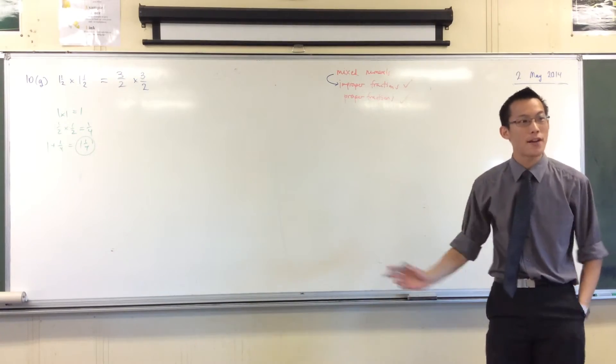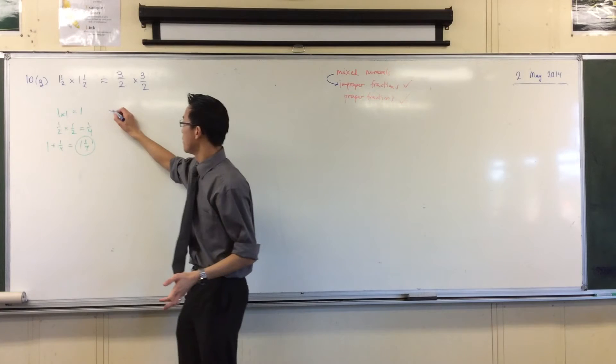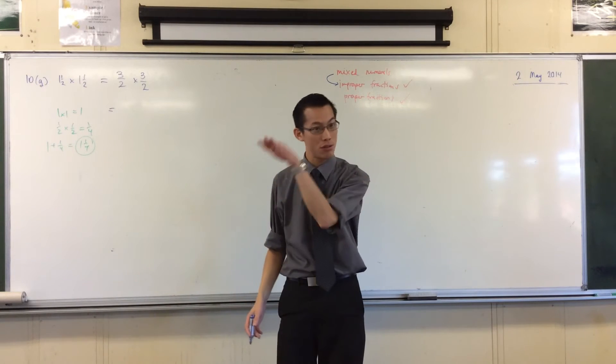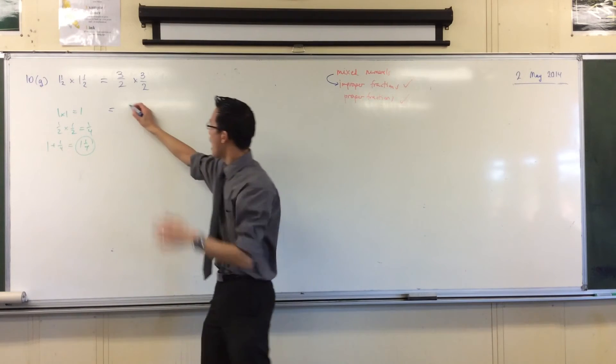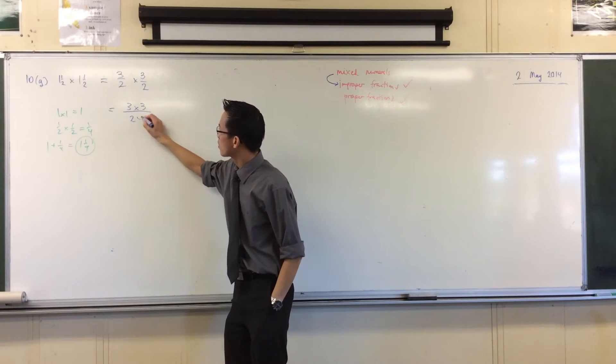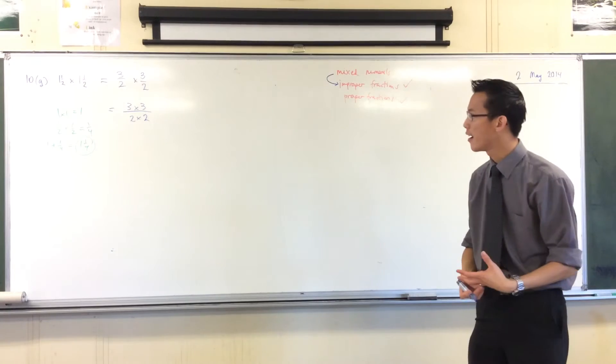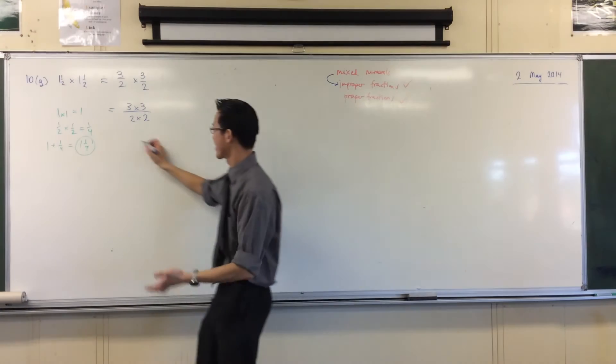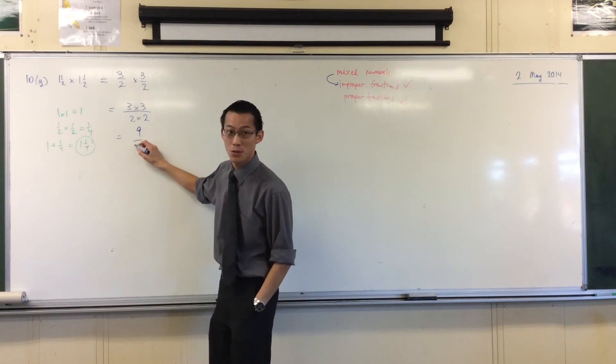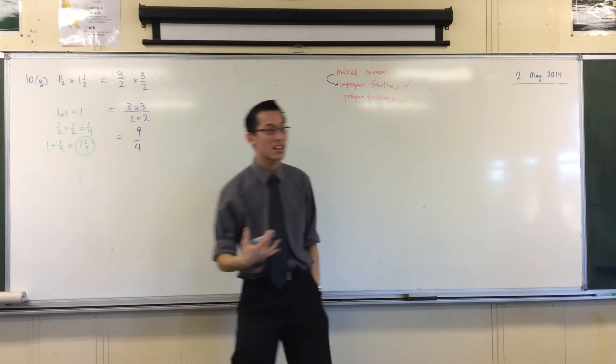So now that it's an improper fraction, it's really easy. Let me just, rather than put down the answer, I'll show you what's going on in my head. I want to multiply the numerators and multiply the denominators. They turn into one fraction, okay? 3 times 3, of course, is 9, and 2 times 2 is 4. Now that is the correct answer.